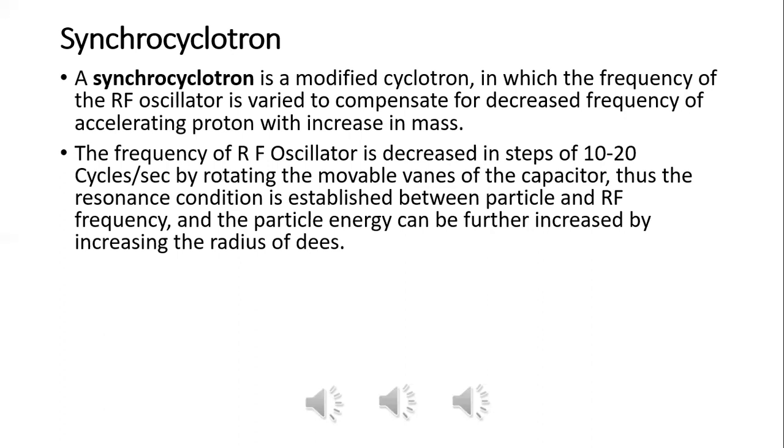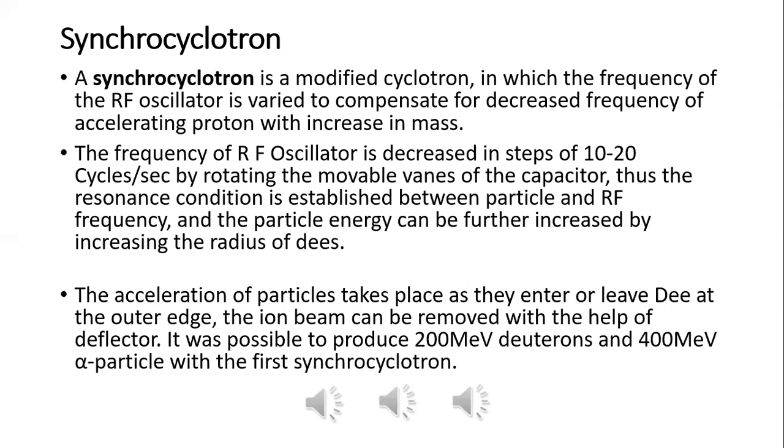As particles enter or leave the D at the outer edge, the ion beam can be removed with the help of a deflector. It was possible to produce 200 MeV deuteron and 400 MeV alpha particles with the first synchrocyclotron.